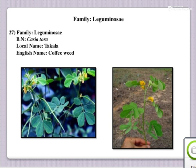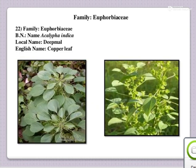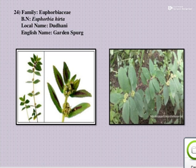The next one is Takla; botanical name is Coffee Weed, under the family Leguminosae; botanical name is Cassia tara. Next one is Deepmal or English name Copper Leaf; botanical name is Acalypha indica, under the family Euphorbiaceae. This is a common weed, mostly occurring in the rainy season.